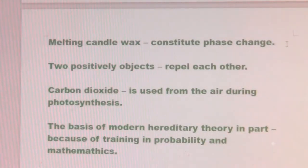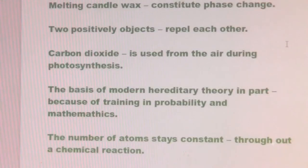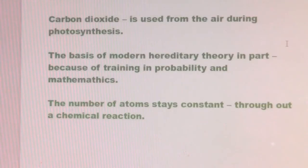Melting candle wax constitutes a phase change. Two positively charged objects repel each other. Carbon dioxide is used from the air during photosynthesis. The basis of modern hereditary theory is in part because of training in probability and mathematics. The number of atoms stays constant throughout a chemical reaction.